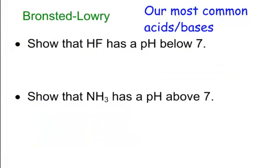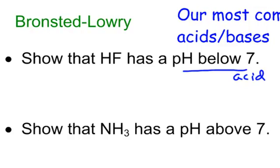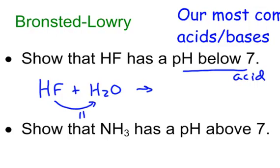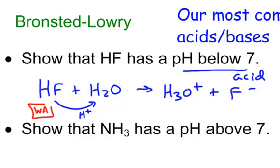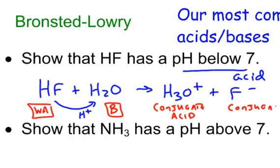You might get a problem that says show that HF has a pH below 7 — meaning it is an acid. We add HF with water, and HF gives away H+ because it's a proton donor, giving you H3O+ and F-. HF is a weak acid, and water is acting like a base here. The H3O+ is called the conjugate acid — it has a lot of H+ in it. The F- would be called the conjugate base, and the F- would be a little bit basic.